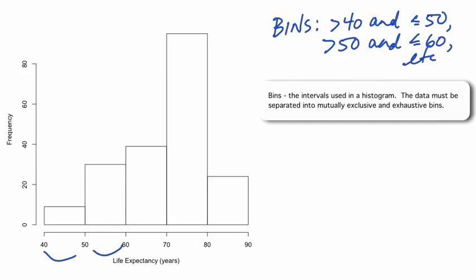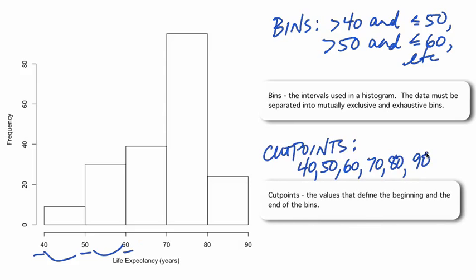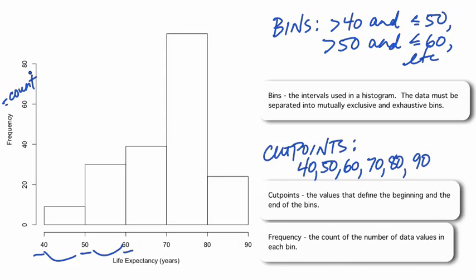The cut points are the values that define the bins — in this case 40, 50, 60, 70, 80, and 90. The vertical axis in our histogram is the frequency, or count, of the number of data values in each bin. We draw touching bars for each bin up to the frequency of that bin.